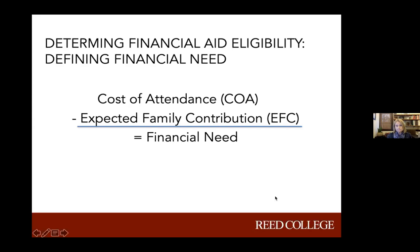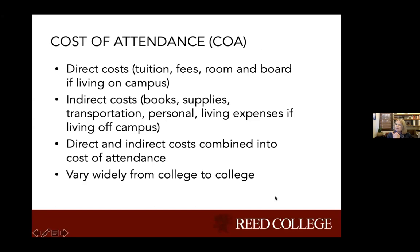The cost of attendance includes tuition, fees, and room and board if living on campus - these are direct costs, the billable costs when you get a bill in the fall. But there are other costs we want to look at: books, supplies, transportation - if you're going across the country you'll have a higher transportation cost - personal living expenses like shampoo and toothpaste, and if you're living off campus, rent and groceries. We combine those direct and indirect costs and that forms the cost of attendance, which will vary widely from college to college.